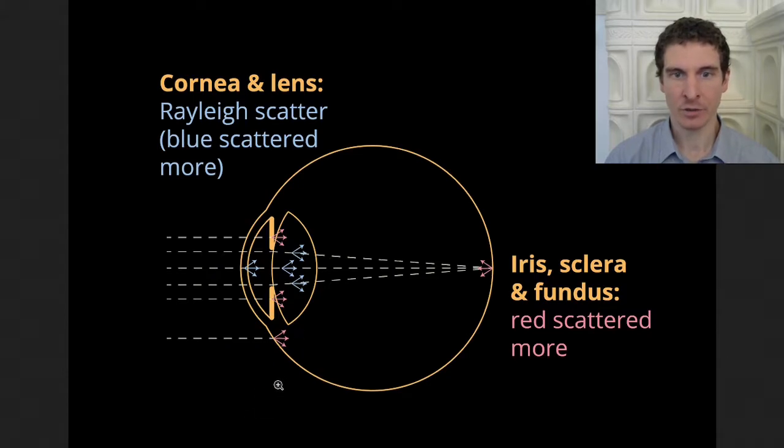Some light also enters the eye from the side, and some light within the eye gets reflected from the back of the eye, and these two locations scatter red light more. When it comes to this mechanism, there is a huge individual variability, depending on eye pigmentation, so individual genetics.